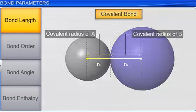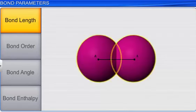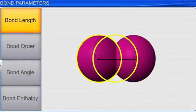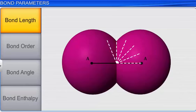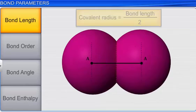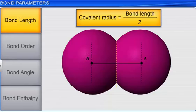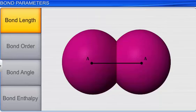In a molecule containing similar atoms, the size of the atoms is the same. Hence, their radii will be the same. In such cases, the covalent radius is half the internuclear distance between the bonded atoms.